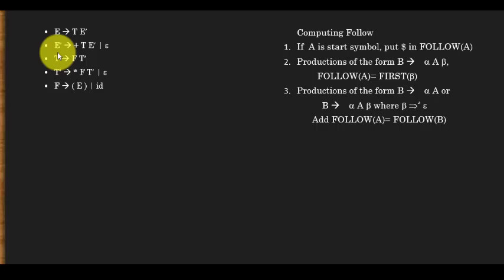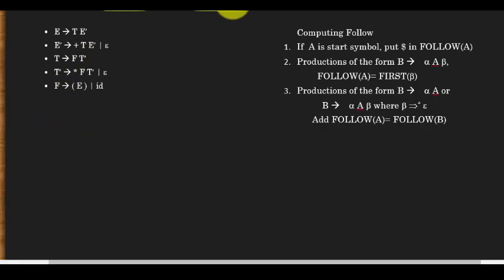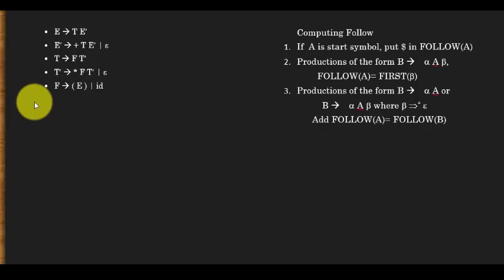This video is about computing the first set and follow set of every context-free grammar. This is required for LL1 parsing, LR0 parsing, and SLR1 parsing. In those parsing techniques you will need to compute the first and follow of the grammar rules. We have five variables: E, E', T, T', and F. The follow set is the harder one to compute, so let's start with first.